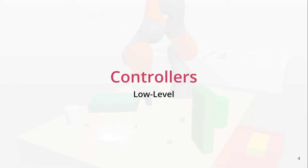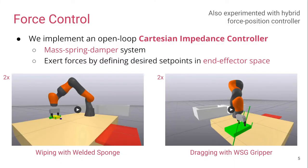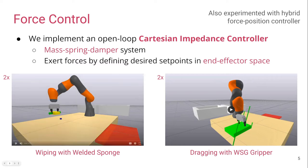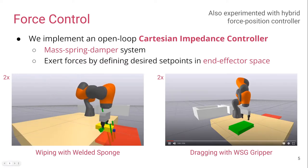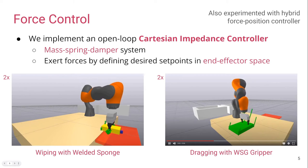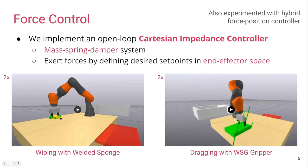Now let's have a look at the low-level controllers we implemented. For force control, we implemented an open-loop Cartesian impedance controller. This allows our robot to act like a mass-spring-damper, and to exert forces we can simply define desired setpoints in the end-effector space. To wipe an object across the table, we can define our setpoints to be underneath the table, such that our controller exerts a force into the table. To drag a green object across the table, we can define our setpoints underneath the object so that we exert enough force to overcome friction. We also experimented with a hybrid position-force controller, but found that it was difficult to tune in comparison to just defining desired setpoints.